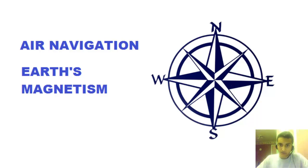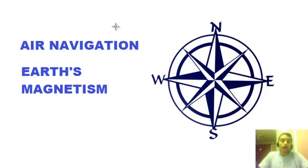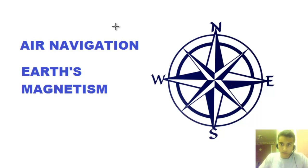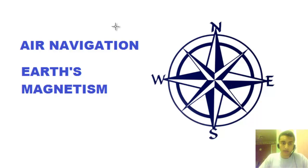Good afternoon everybody and welcome back to air navigation. Today we'll be talking about earth's magnetism, and specifically we're going to be studying variation and deviation. Variation also has the name of magnetic declination. It has a very important role in aircraft, even for private pilots, because most airplanes determine headings by locating magnetic north through a compass.